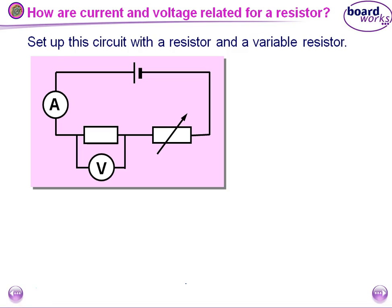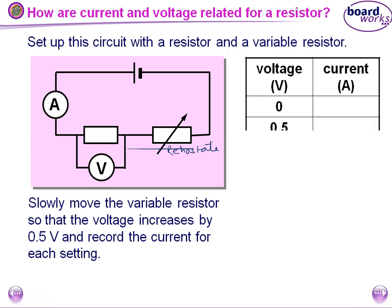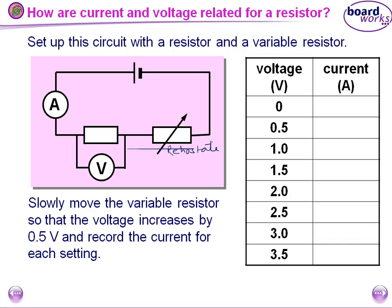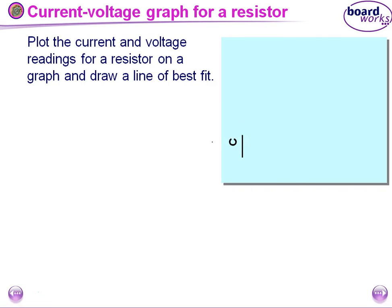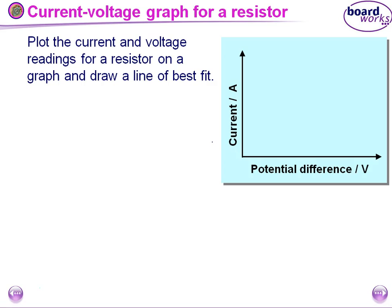Now, what is the experimental setup? We have the resistor across the voltmeter and there is a variable resistor. We remove the variable resistance step by step. If the voltage increases by 0.5 volt, we record the current for each setting. Now we plot a graph between current and voltage, taking current on the y-axis and voltage on the x-axis, and plot all the values. Now we join them.